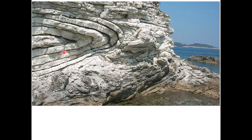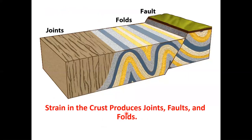This is a fold and you can see a lot of compression here because it has been overturned. Strain in the crust produces joints, faults, and folds. We'll pick up with this next time.